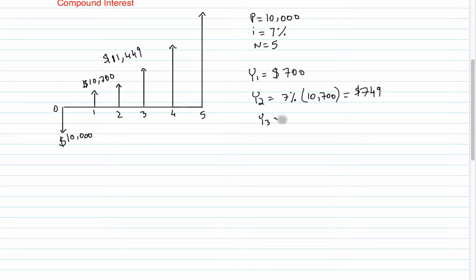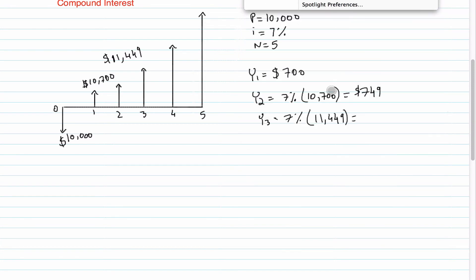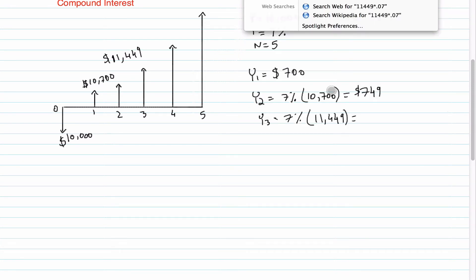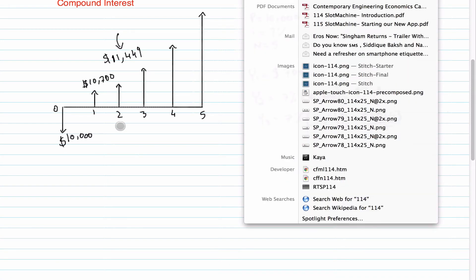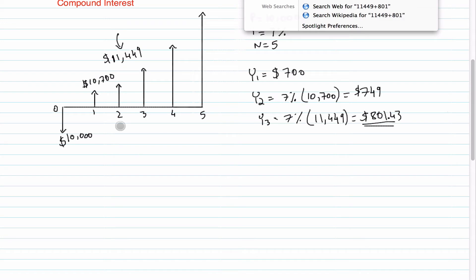In year three you take seven percent of eleven thousand four hundred and forty-nine, which equals eight hundred and one dollars and forty-three cents. You add this to the year-two value of eleven thousand four hundred and forty-nine, so you get twelve thousand two hundred and fifty dollars.